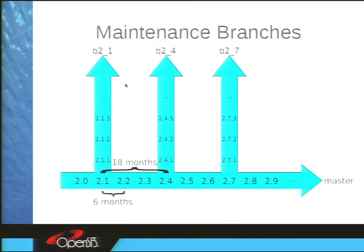One of the major releases along the main master branch will become the start of a maintenance branch. The maintenance branches are vertical on this picture — every one of those releases has only bug fixes or minor support for a new kernel or major OS release. Any new features go onto the horizontal branch, the main branch of development.